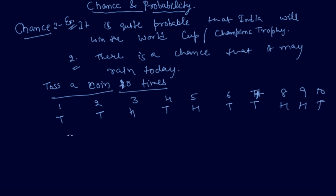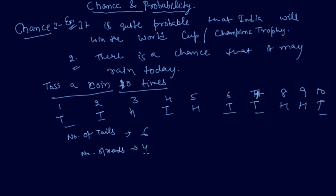So you can directly write the number of tails is 6 and the number of heads is 4. You can also make a table for that. This is what we call chance.